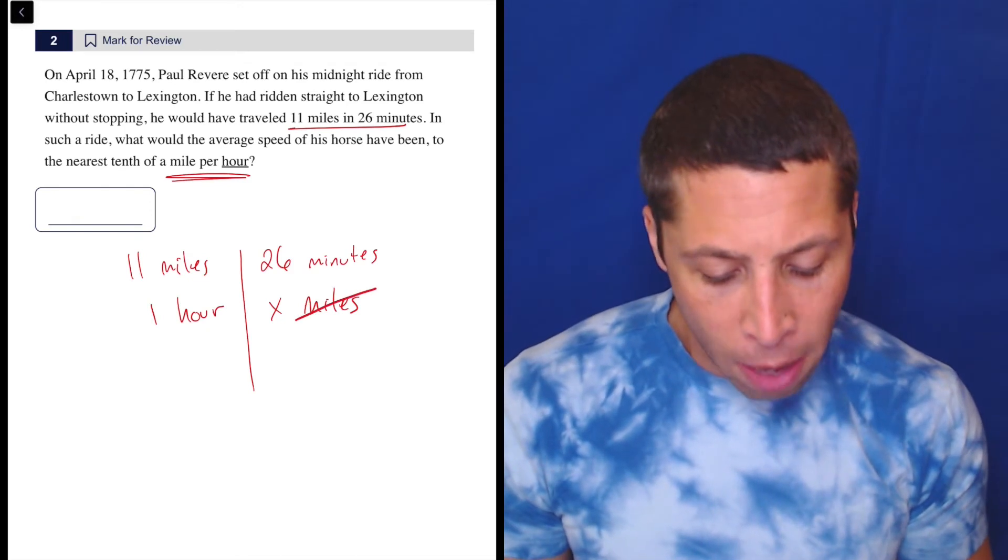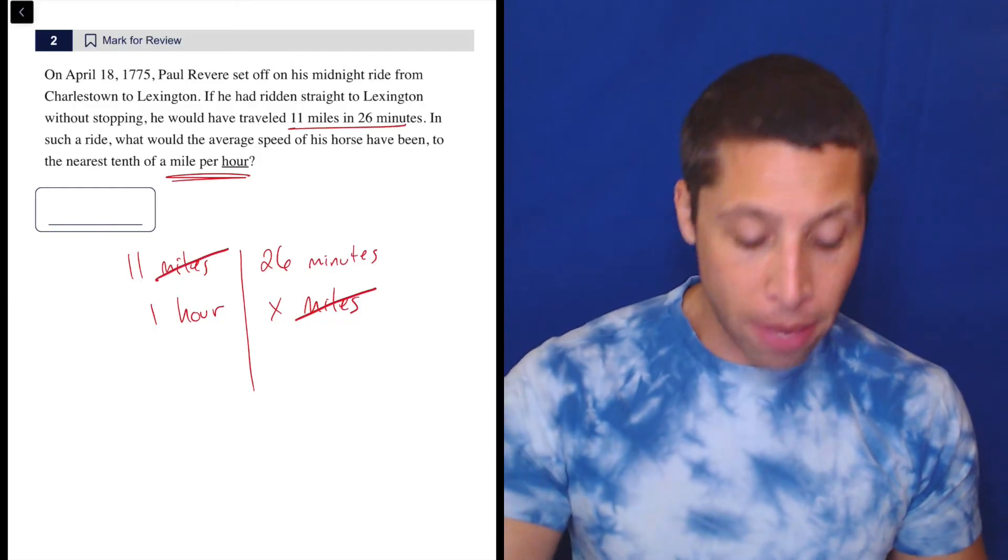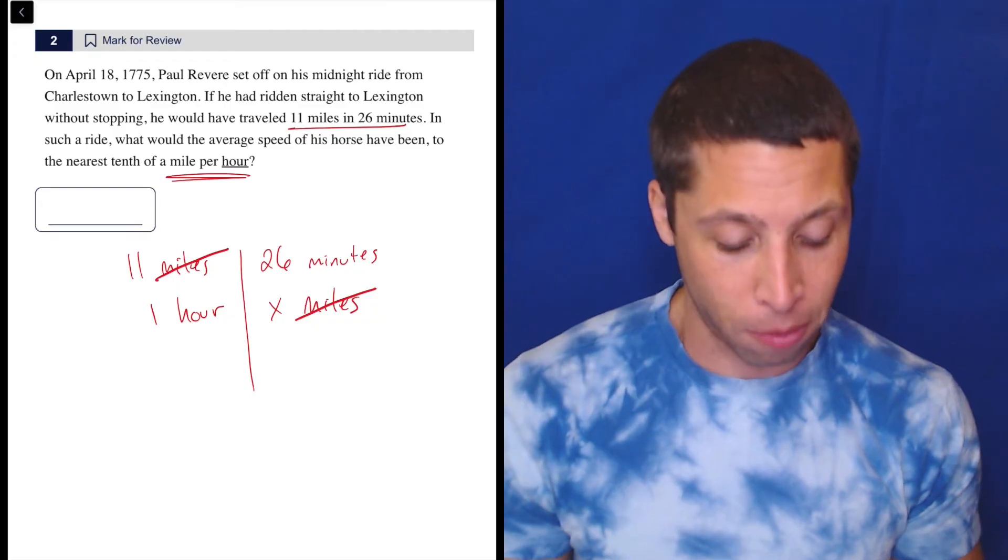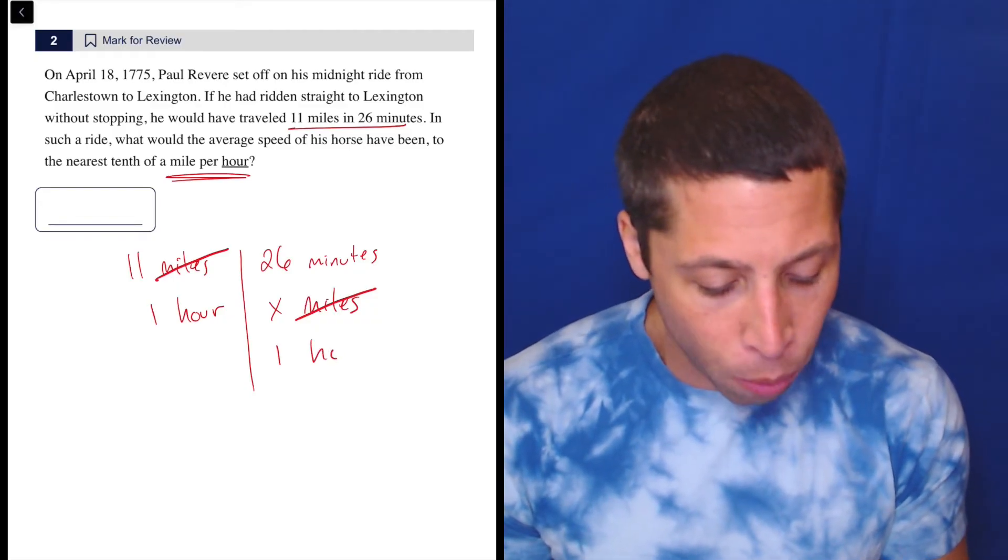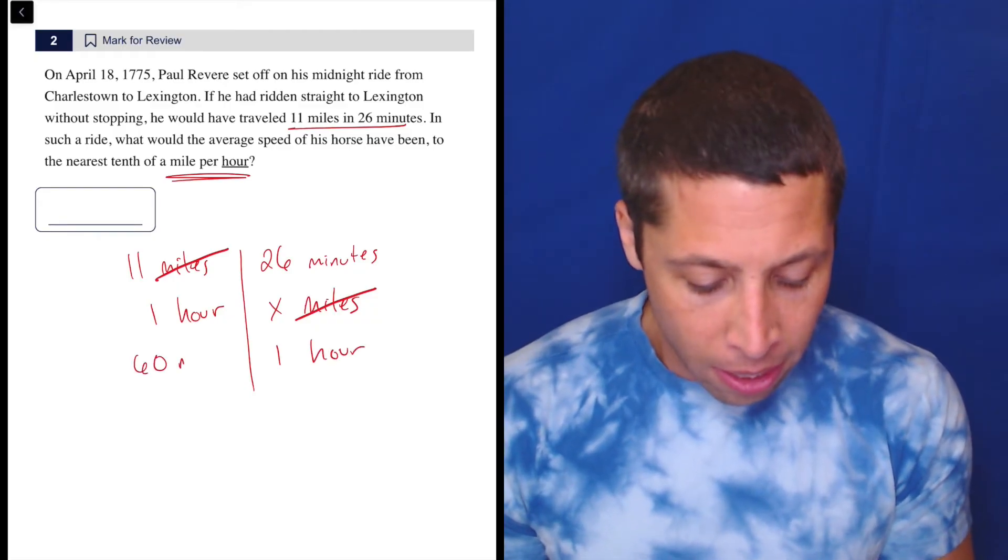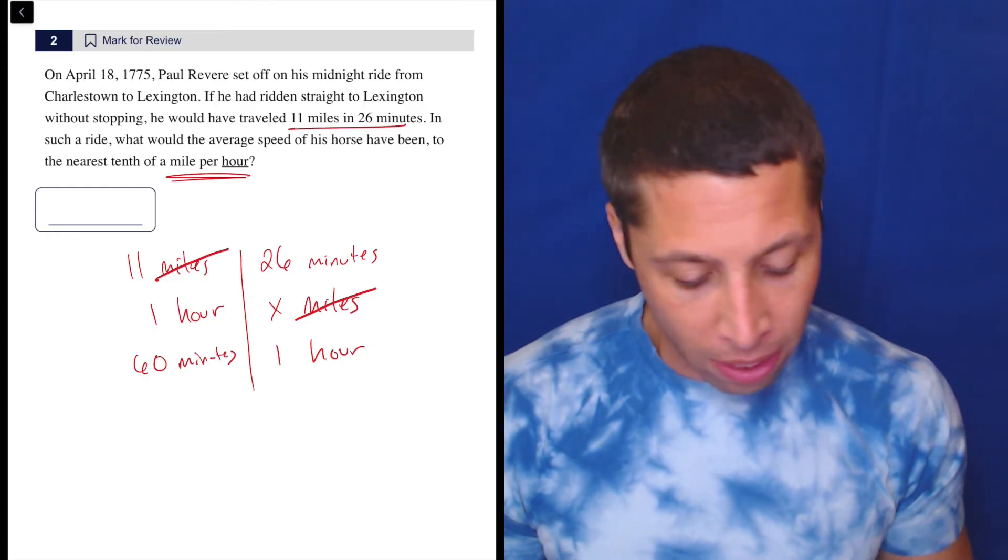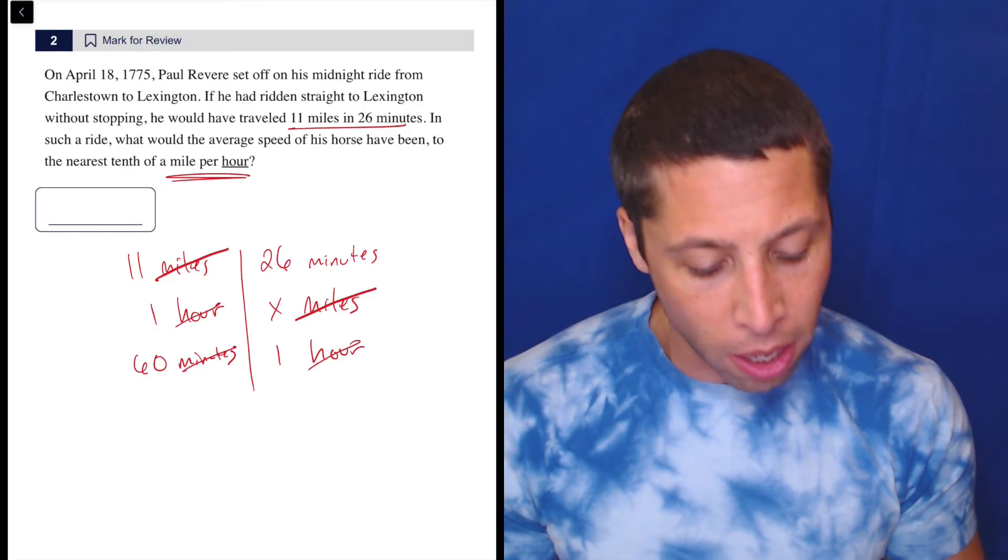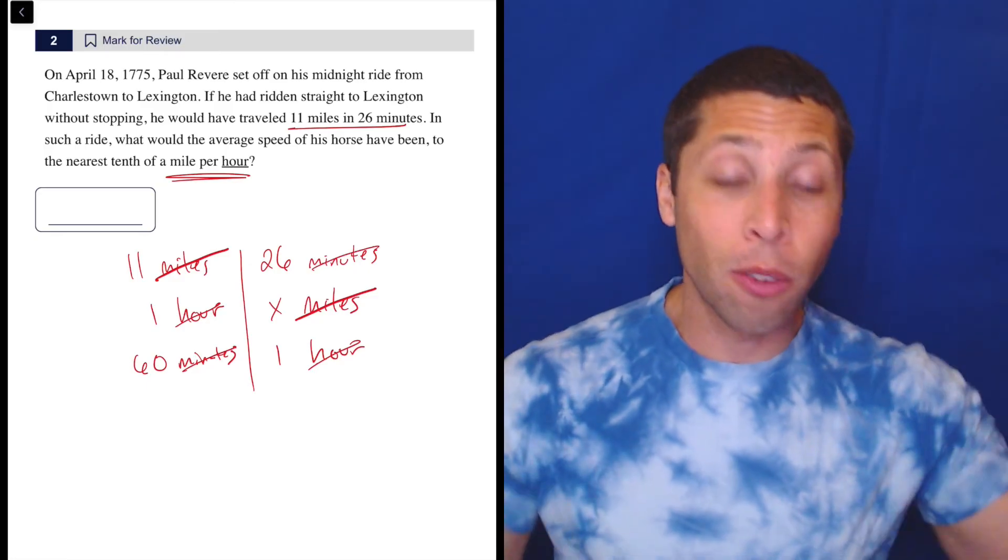And so the miles are going to cross out, but we're not done because we need to cross out minutes and hours. So just try to think, are there conversions that are going to get us across from that? So we know that one hour is 60 minutes. So forgive the handwriting, but there you go. Hours are gone, minutes are gone. When everything is gone, we know we're done.